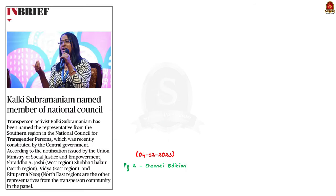This article is taken from the 4th December newspaper. Recently, the central government constituted the National Council for Transgender Persons. Following this, the central government also nominated representatives to the council. A trans person activist named Kalki Subramaniam has been nominated as the representative to the council from the southern region. Apart from this, the central government also nominated four other persons from four different regions. In this context, let us know about the National Council for Transgender Persons and the Transgender Persons Act 2019.